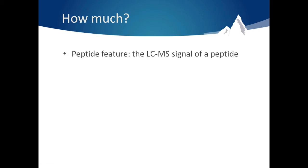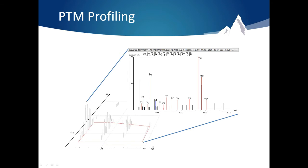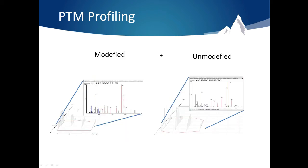To answer the question of how much of the protein is phosphorylated, PEAKS uses a concept implemented in label-free quantification experiments. It uses the concept of peptide features, meaning the LC-MS signal of that peptide. It has been proven that the area under the curve of the peptide feature is proportional to the relative abundance of that peptide. So for a peptide with a confident modification site shown in this LC-MS, PEAKS will find the area under the curve of its associated LC-MS feature.